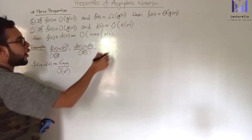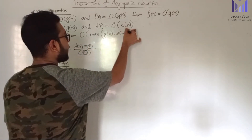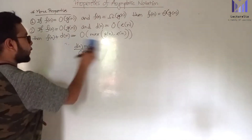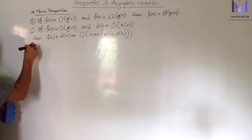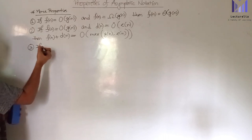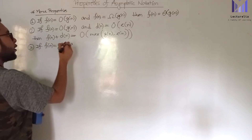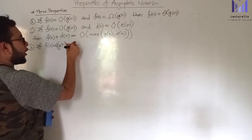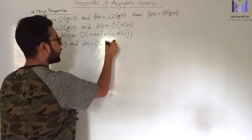x of g of n and e of n. Equal to some of the outer properties. Next, third property: if f of n is Big-O of g of n and d of n is Big-O of e of n.